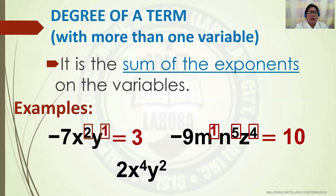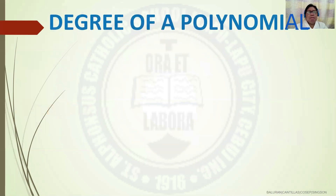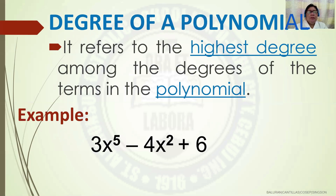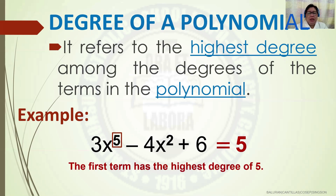Next example: 2x exponent 4 y squared — the exponent of x is 4 and the exponent of y is 2, so the degree of the term is 6, since 4 plus 2 equals 6. Now, the degree of a polynomial refers to the highest degree among the degrees of the terms in the polynomial. Example: 3x exponent 5 minus 4x squared plus 6 — the degree of the polynomial is 5, since the first term has the highest degree of 5.